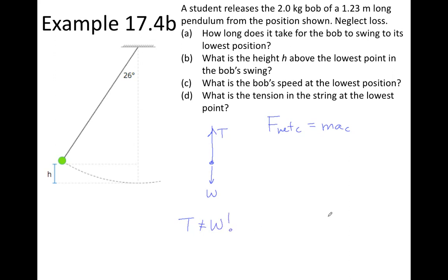Do not make the mistake of saying that the tension is equal to the weight, because it is not. It is not at rest at that point. It's in circular motion. So there has to be a larger force in towards the center of the circle than there is outwards, to provide what's known as a net centripetal force, which would be given by tension minus weight.